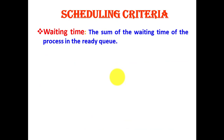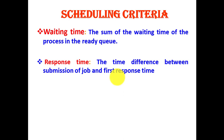The fourth criteria is waiting time, which is the sum of the waiting time of a process in the ready queue. It is not waiting for any I/O operation — it is only waiting for the attention of the CPU. The fifth criteria is response time, which is the time difference between submission of a job and the first response.